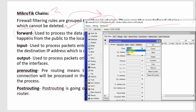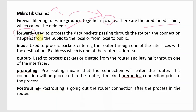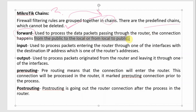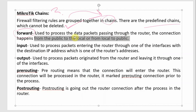We select the chain — the Forward chain is used to process data packets passing through the router. The connection happens from public to local, or local to public. Therefore the Forward chain is used.